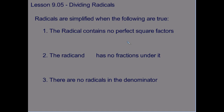Dividing Radicals. Radicals are simplified when the following is true: the radical contains no perfect square factors, so you have factored the radical and pulled out any matching pairs.